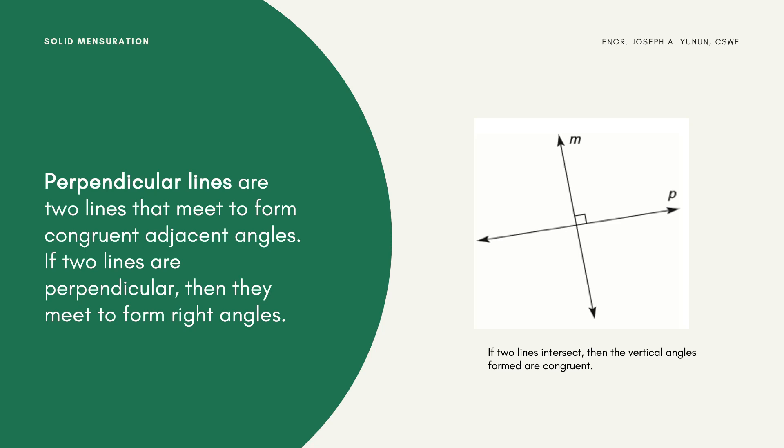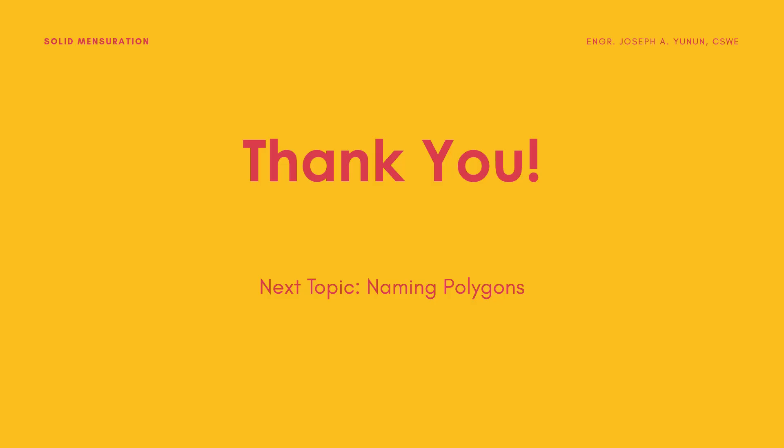In summary, we covered the definitions of points, lines, angles, types of angles, and perpendicular lines. Our next topic will focus on the naming of polygons.